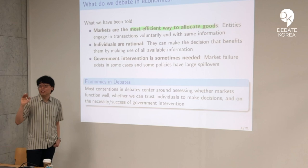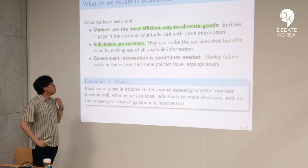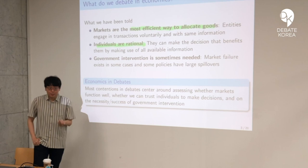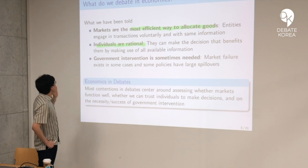Another key message is that individuals are rational, in the sense that they can make decisions that benefit them, making use of all available information — they can make the best cost-benefit analysis given all the information and process it, so there's no need to actually intervene in that dimension. And if the first two assumptions are satisfied, classical economics says we don't really need a government.